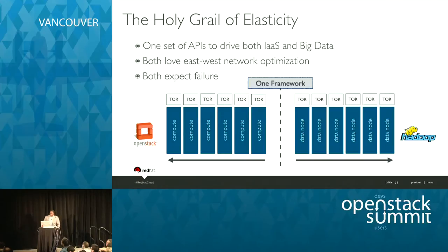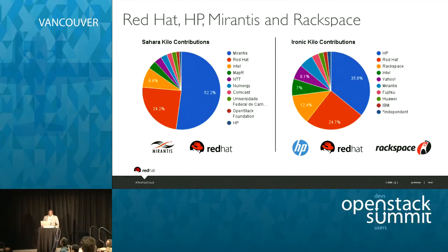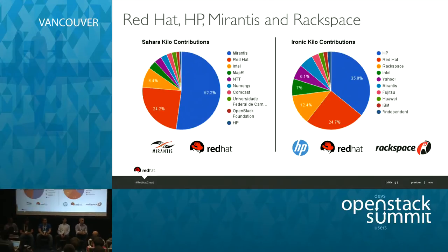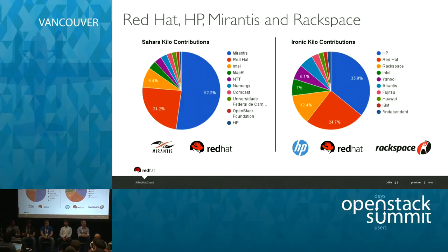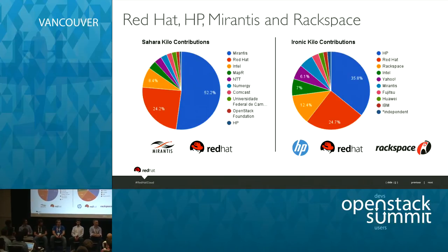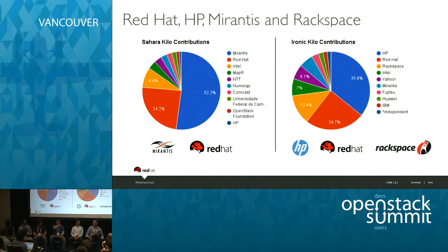So let's talk about who's involved. On the Sahara side, you've got Mirantis leading the charge. We've got the PTL of Sahara on the panel with us today. Red Hat is a contributor as well. On Ironic, you've got HP, Red Hat, and Rackspace. Rackspace has done a tremendous amount of maturation work to bring it up to speed, and we've got Jim from Rackspace to talk about implementation and all the nuances of what Rackspace has done there.